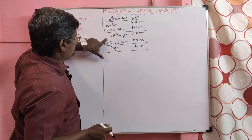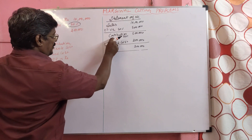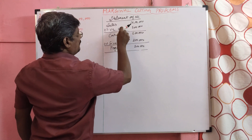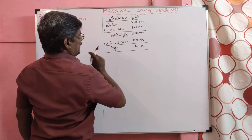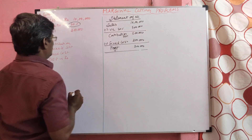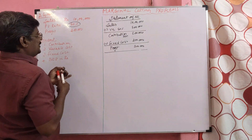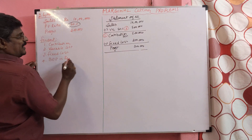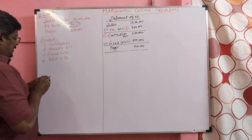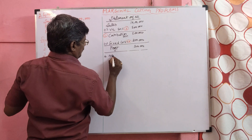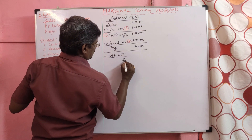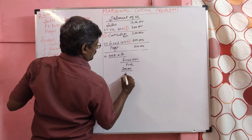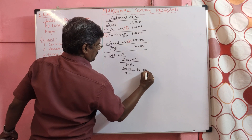Sales and profit are given; variable cost, contribution, and fixed cost are not given. But instead of contribution they gave PVR. PVR is nothing but contribution. So 10 lakh into 50% equals 5 lakh contribution. Variable cost is the remaining 50%, also 5 lakh. Deducting profit from contribution gives fixed cost. Question 1: contribution — 5 lakh. Question 2: variable cost — 5 lakh. Question 3: fixed cost — 2 lakh. Question 4: breakeven point in rupees = fixed cost divided by PVR = 2 lakh divided by 50% = 4 lakh.